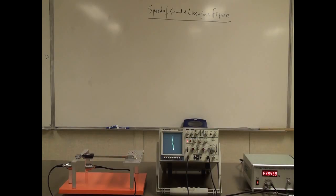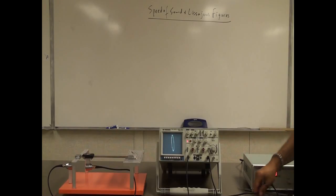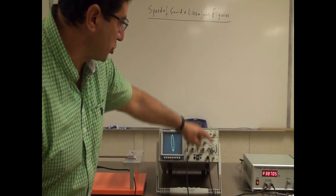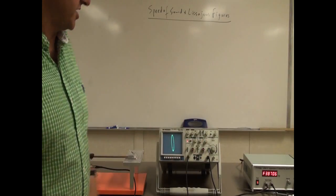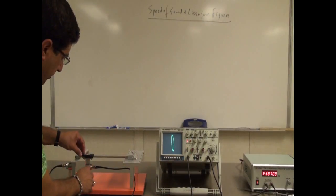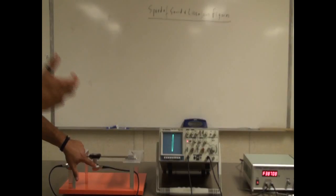I can also increase the amplitude of the wave, and you can see that changing. One part of the signal output goes to the left side — this is called the sound emitter, which emits sound waves. The other output goes directly to the Y channel of the oscilloscope. From the other oscilloscope channel, a wire goes to this receiver on the right.